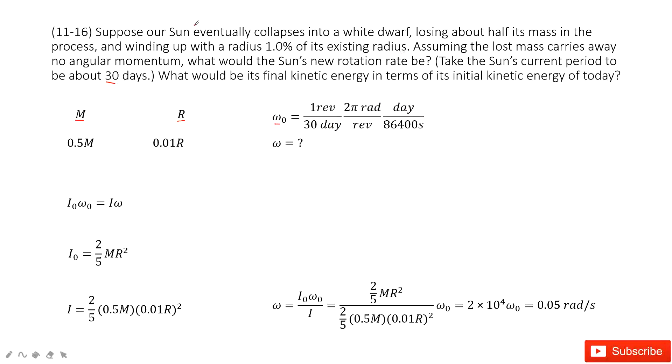Now the Sun becomes a white dwarf. The mass becomes half and the radius becomes 1%. We need to consider the angular velocity for the white dwarf. It tells us to assume lost masses carry away no angular momentum.